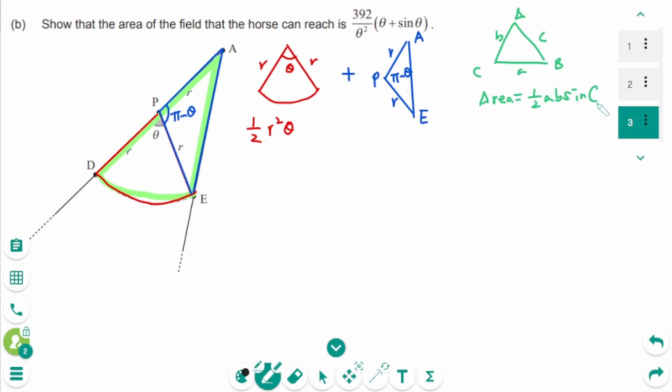The area is 1 over 2 AB sin C. So 1 over 2 times A times B, R times R, is R squared. Then sin C.